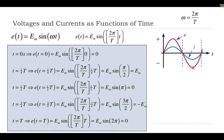At three quarters of a period, the value should be negative. Plugging in three quarters of a period gives sine of 3π/2, which is sine of 270°. Sine of 270° is negative one, so I get negative the maximum amplitude. Then after one full period, I get sine of 2π, which is zero again. This confirms what the angular frequency represents — the angle covered in one period.